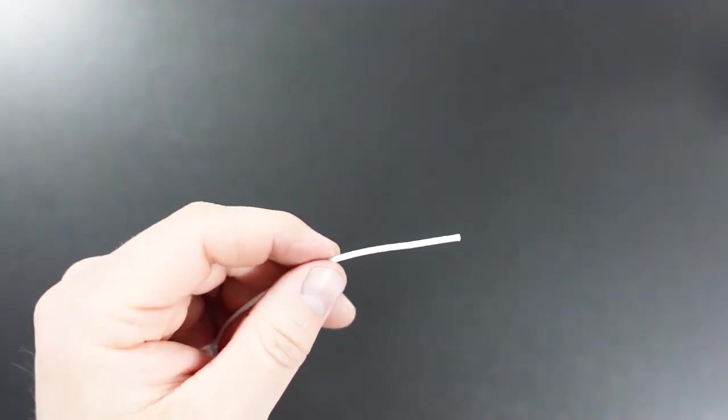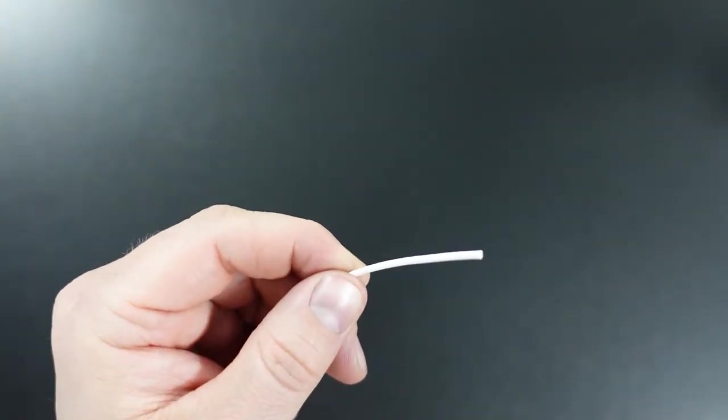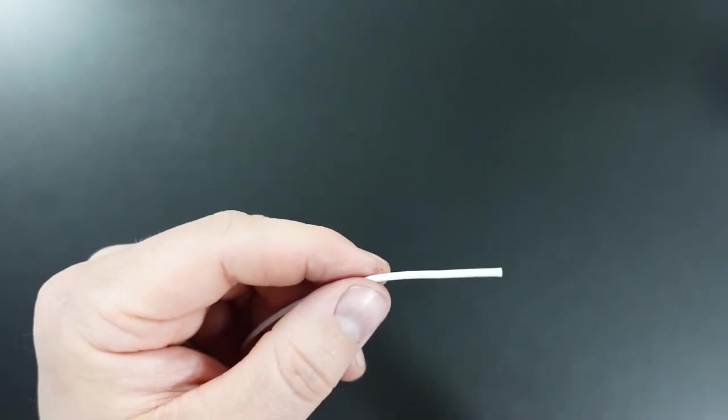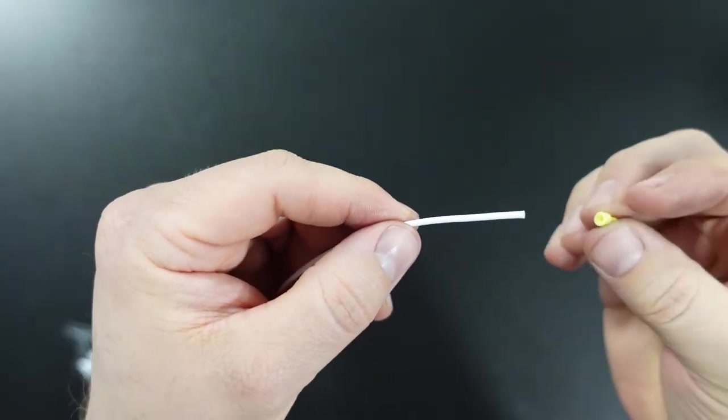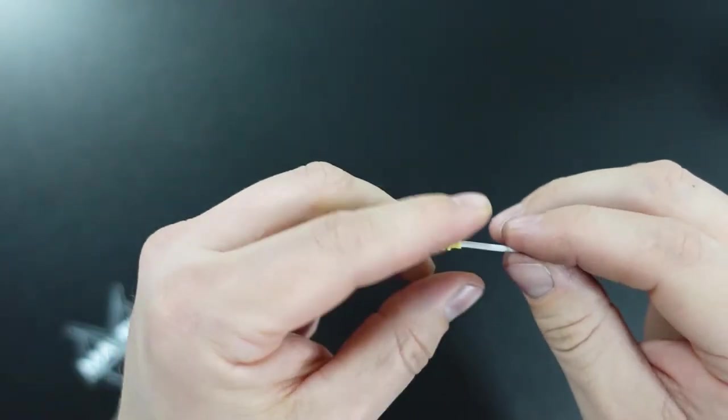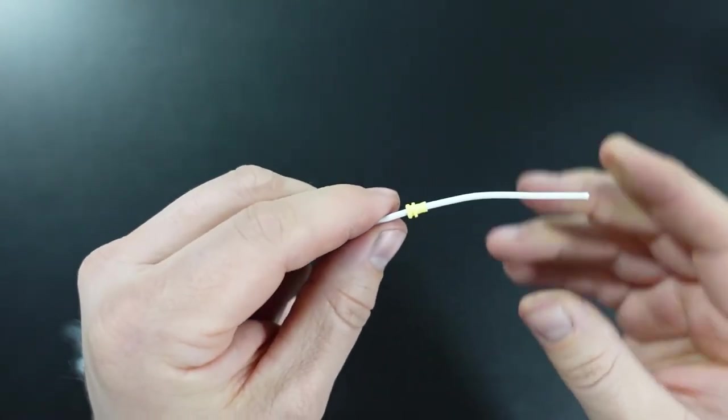Let's go ahead and start the crimping process. This is a piece of 20 gauge TXL wire. You could use Tefzel, you could use 22 gauge. Either way you're going to start by putting the yellow seal onto the wire and slide it back a ways because we're going to strip some wire for the terminal to be crimped on.